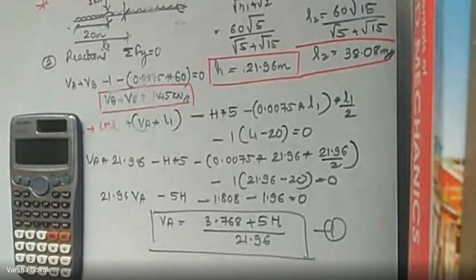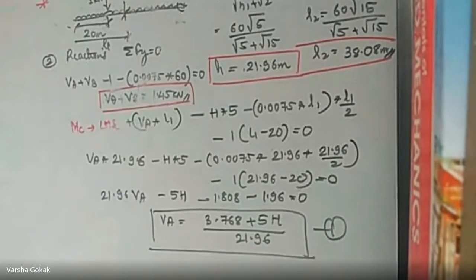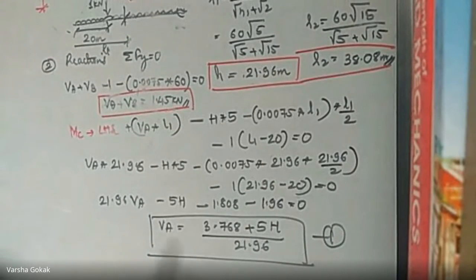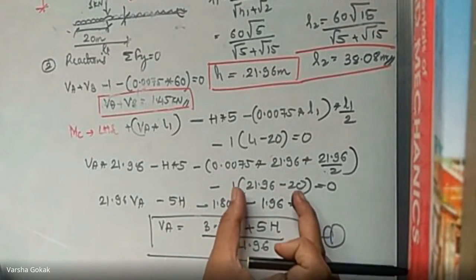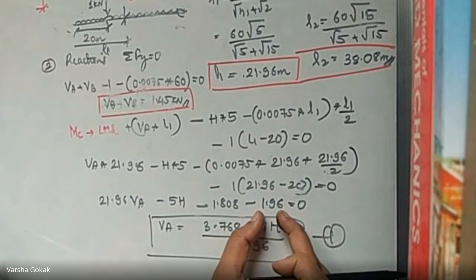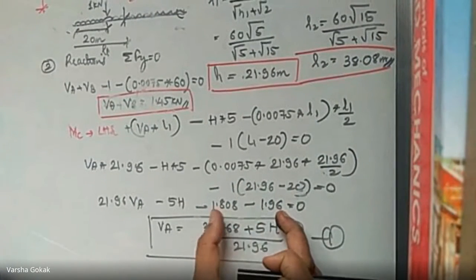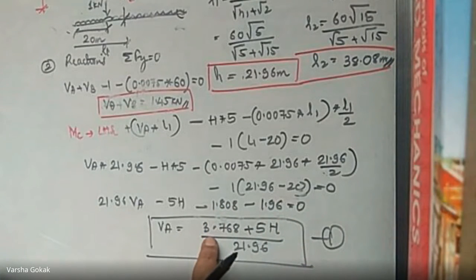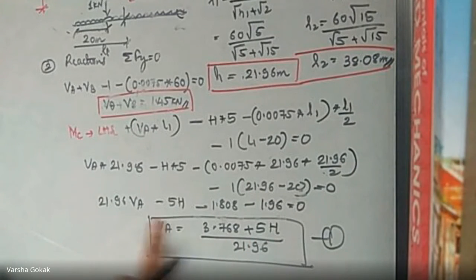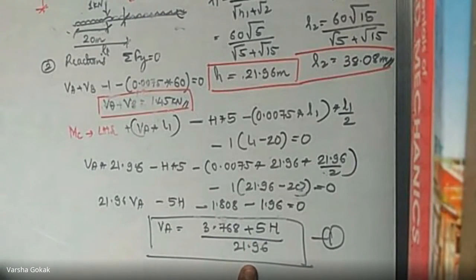Evaluating: 0.0075 into 21.96 into half of 21.96 equals 1.808, and 1 into 1.96 equals 1.96. Both terms are negative and go to the right side, summing to 3.768. So VA equals (3.768 plus 5H) divided by 21.96.